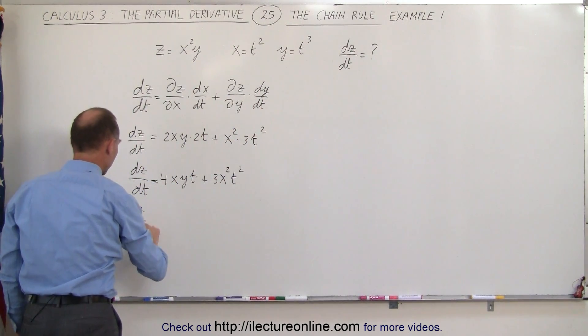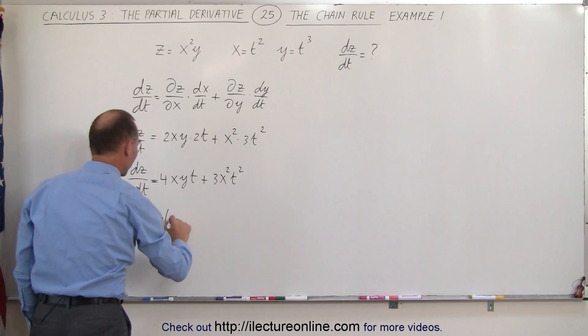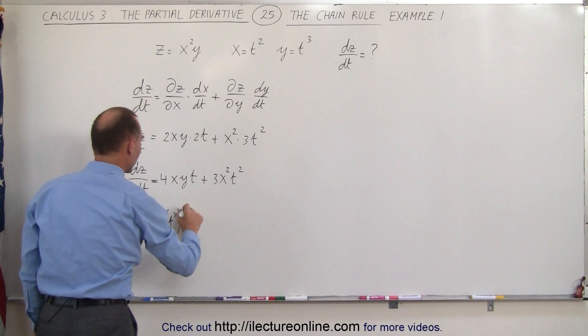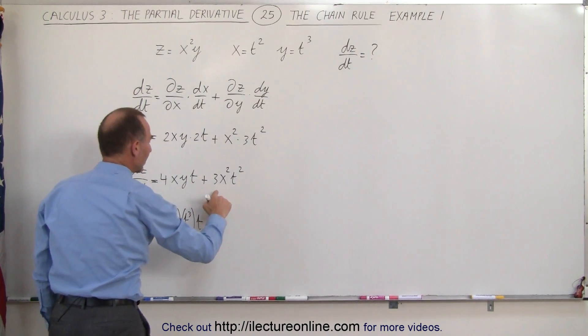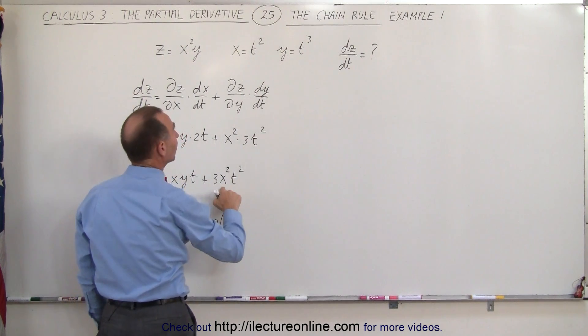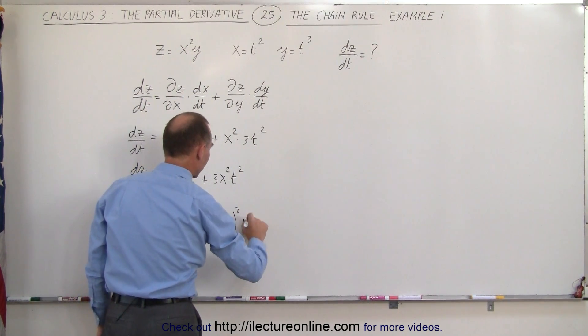dz dt is equal to 4 times, instead of x we write t squared, instead of y we write t cubed, and that's times t plus, here we have 3 times, x can be written as t squared, we have to square that times t squared,